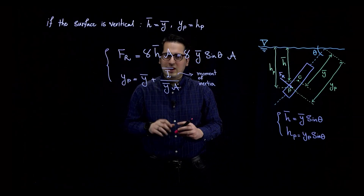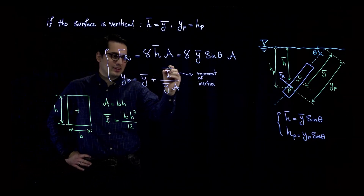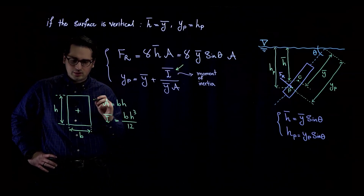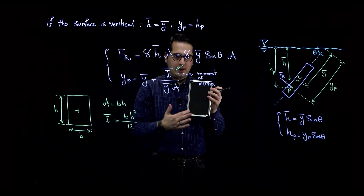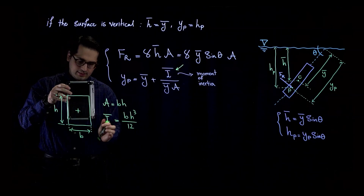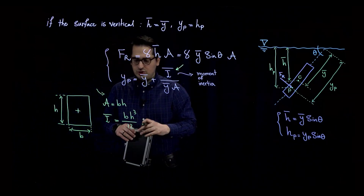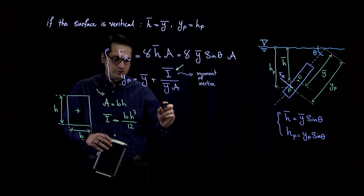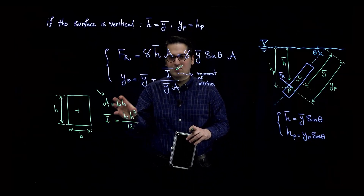In the next video I'll go over examples to make this crystal clear. Before that, you may ask how to calculate the moment of inertia I-bar. Your textbook has a table for this. For a rectangular surface with height h and width b, the area is b times h and the moment of inertia is given by a standard formula. Similar formulas exist for circular areas, half circles, and so forth — so check your textbook for the moment of inertia of different surface shapes.